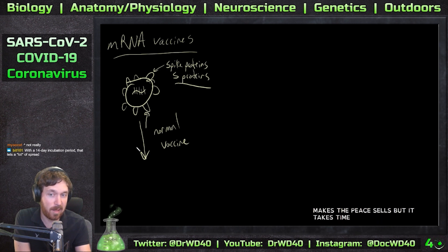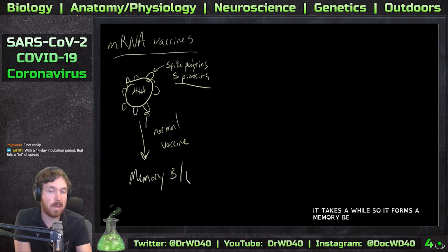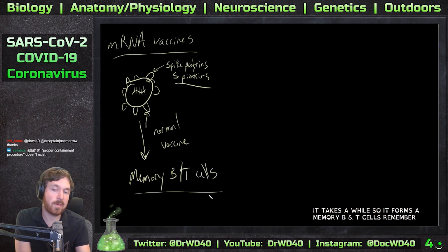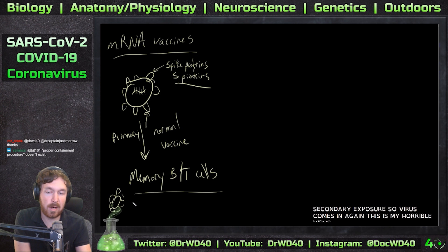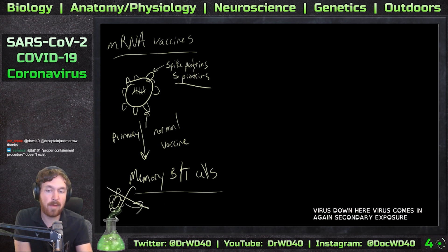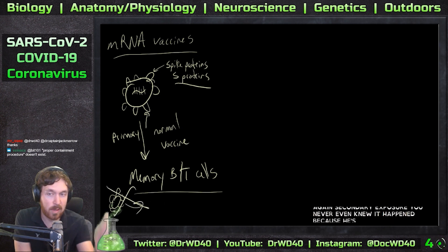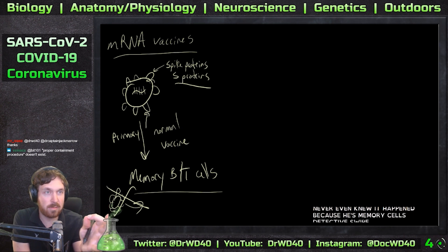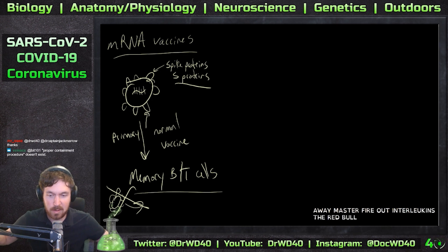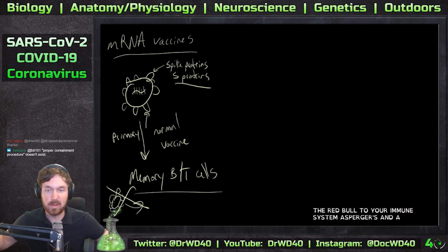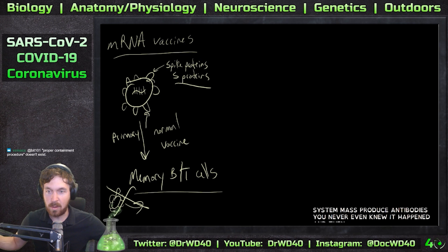Some of those B cells become memory B cells, which store the information for the spike protein. A normal vaccine forms memory B and T cells — that's the primary exposure. Then on secondary exposure, when the virus comes in again, you never even knew it happened because those memory cells detect the spike proteins right away, mass-fire interleukins, and mass-produce antibodies.